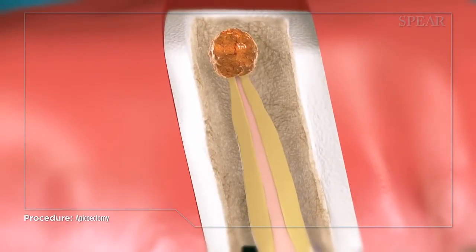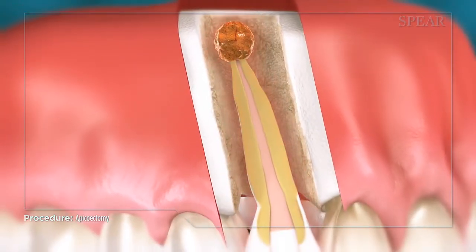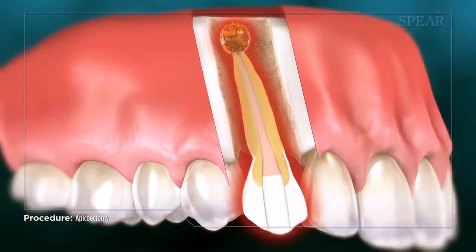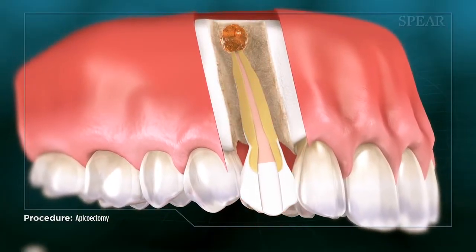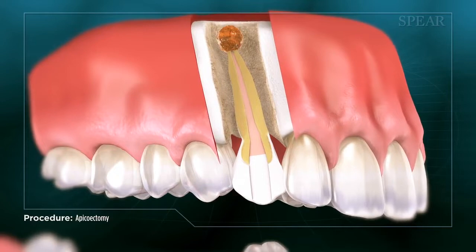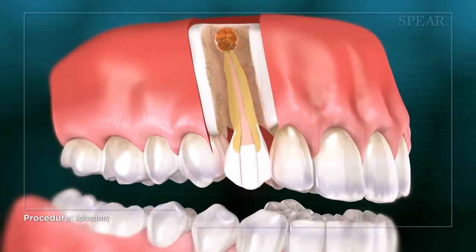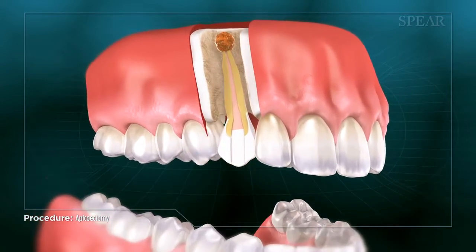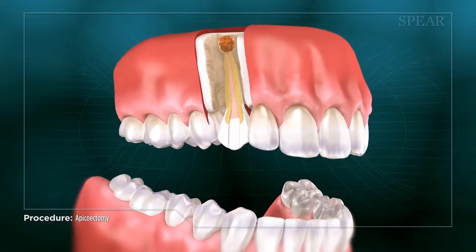Symptoms of an infection at the root tip include throbbing tooth pain, sensitivity to heat, and sensitivity to touch when chewing. If the infection progresses, it can cause fever, swollen lymph nodes, and sinus pain. If left untreated, it may result in loss of the tooth and spreading of the infection throughout your body.